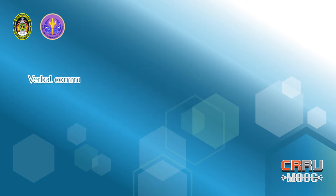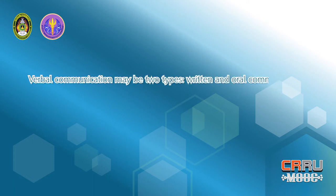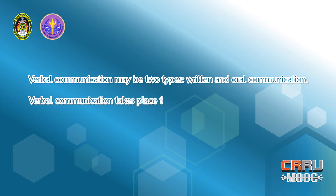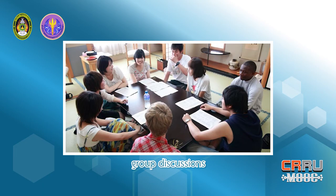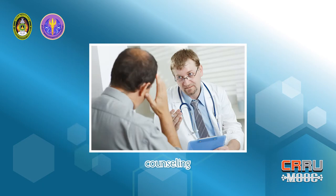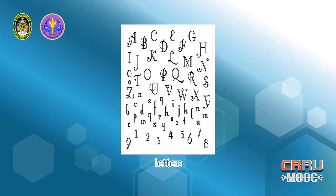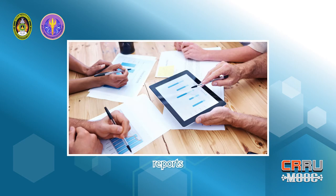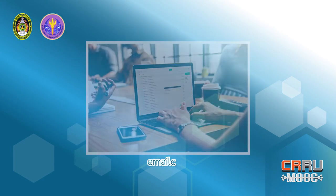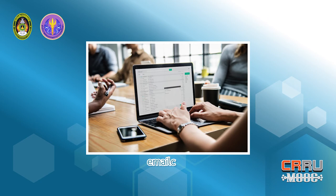Verbal communication may be of two types: written and oral communication. Verbal communication takes place through face-to-face conversations, group discussions, counseling, interviews, radio, television, calls, memos, letters, reports, notes, email, and so on.